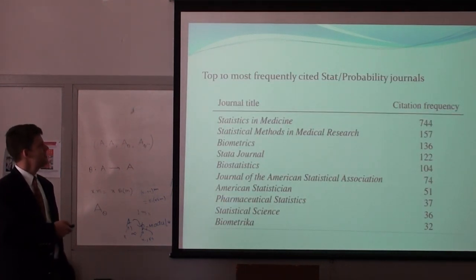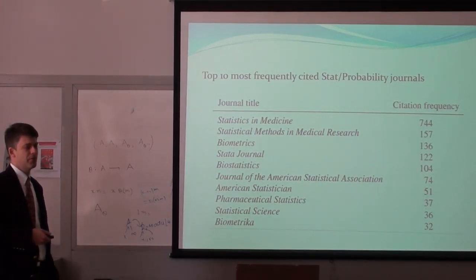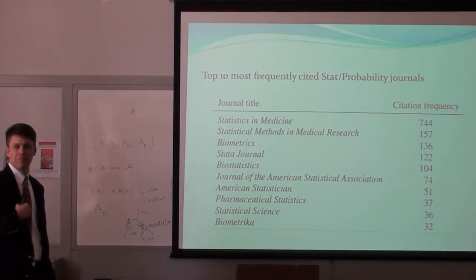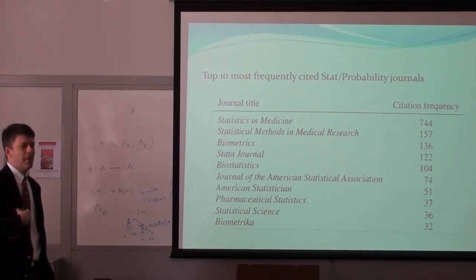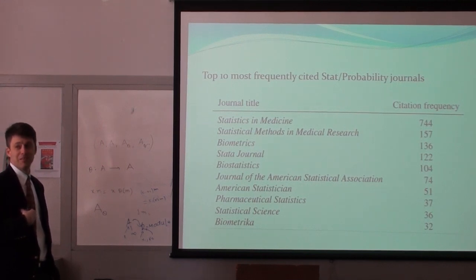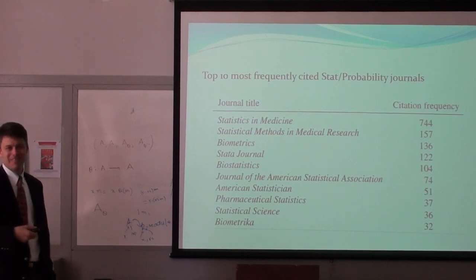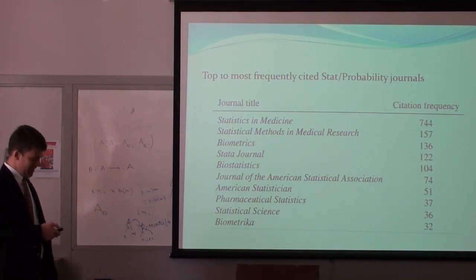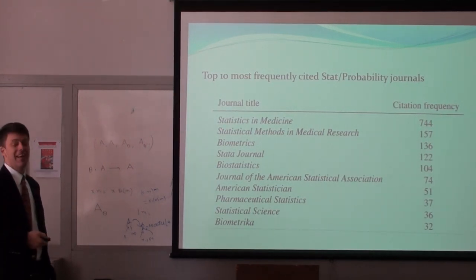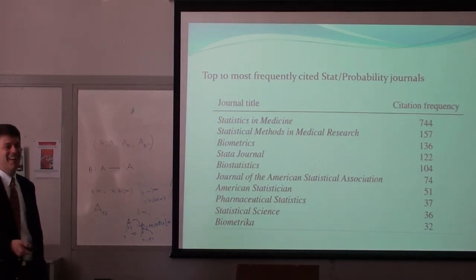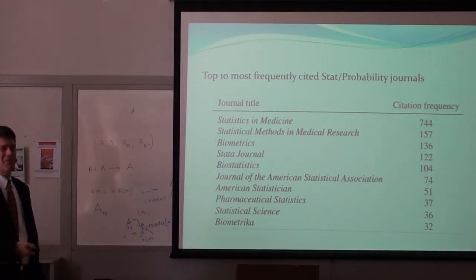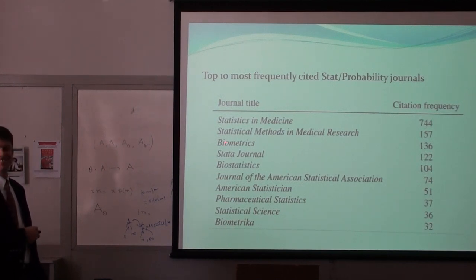These are the journals that were cited most frequently, and nothing was surprising here. Statistics in Medicine is our top journal. I had never published anything in Statistics in Medicine before and had always wanted to. So guess where I tried to publish this? I sent it to Statistics in Medicine. I was nervous because I thought, what if they say no? Thankfully, they accepted it — so this did get published in December.